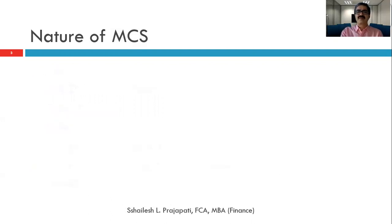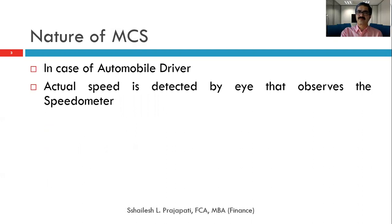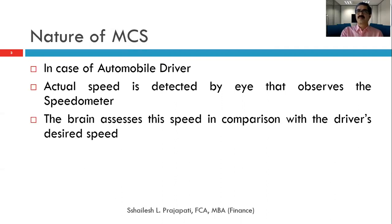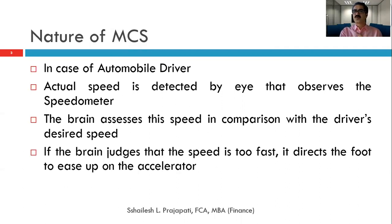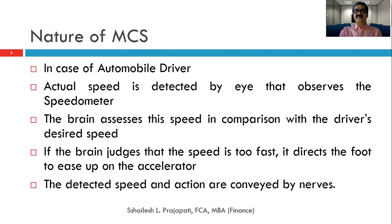Using an automobile driver as an example: the actual speed is detected by the eye observing the speedometer, which is the detector. The brain assesses the speed in comparison with the driver's desired speed, acting as the assessor. If the brain judges the speed is too fast, it directs the foot to ease up on the accelerator — that is the effector. The detected speed and actions are conveyed through the nervous system, forming the communication channel.